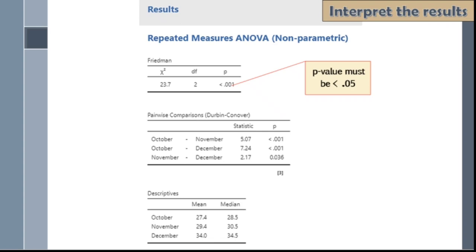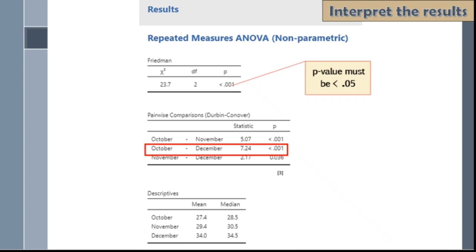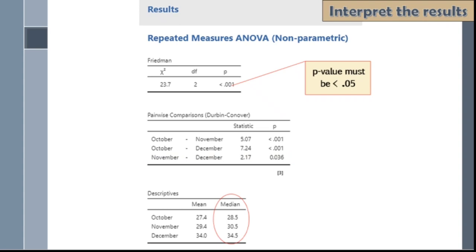This is how we interpret the results. First, compare October and November, then examine the p-value to see if it is significant with less than 0.05. Next, compare October versus December and again look at the p-value. The same goes for November versus December. For the descriptive statistics, instead of mean and standard deviation, the value you should report is the median.